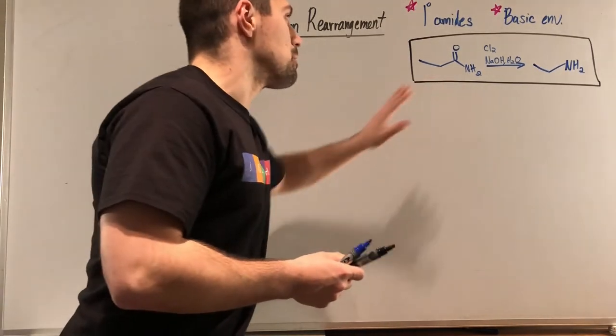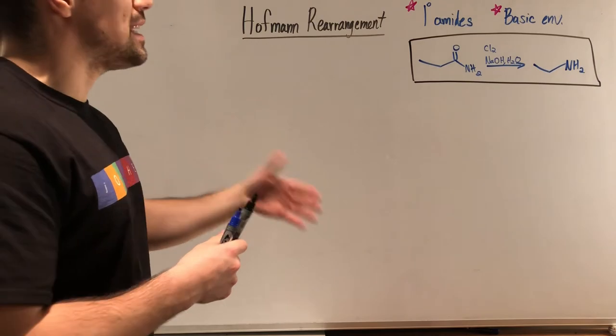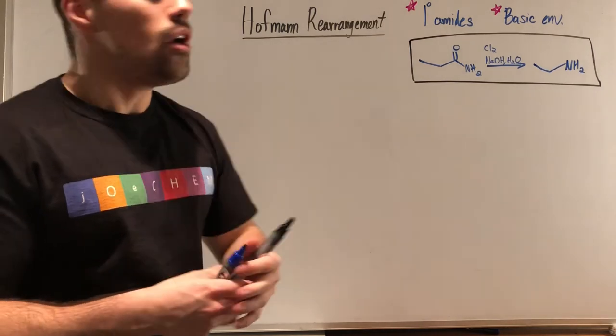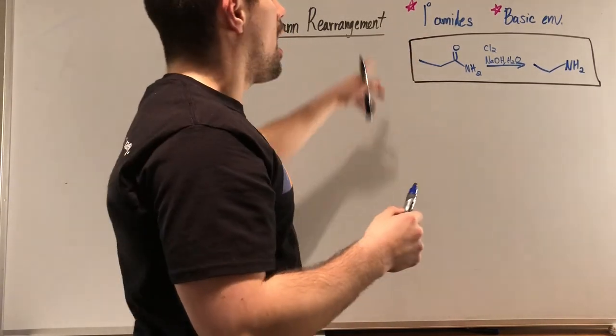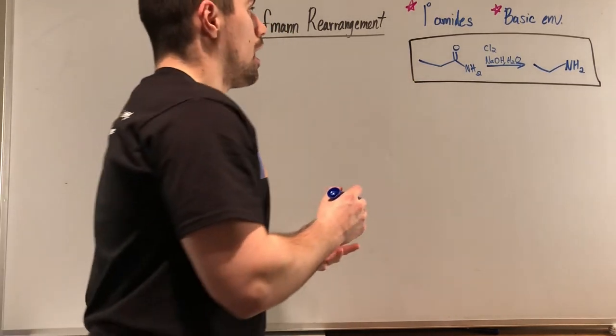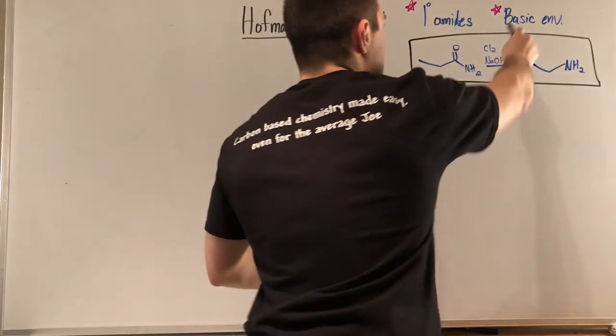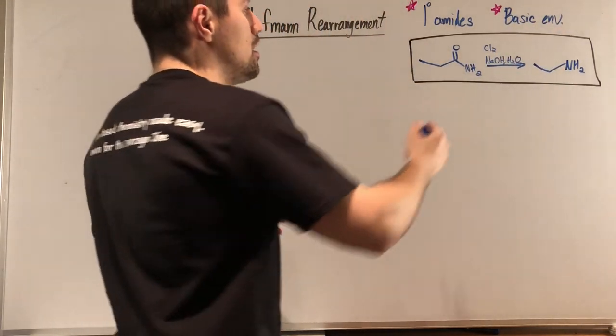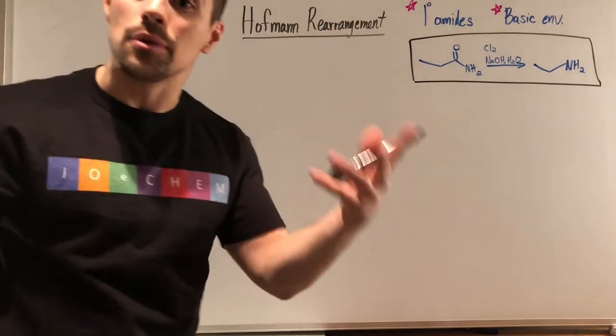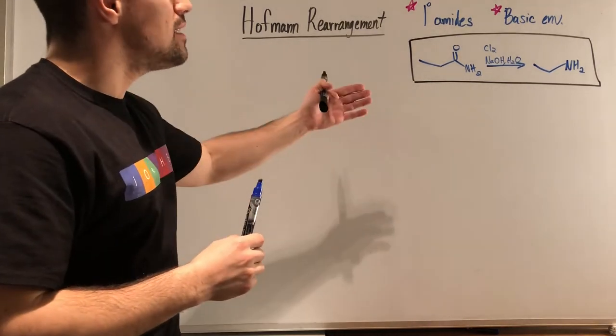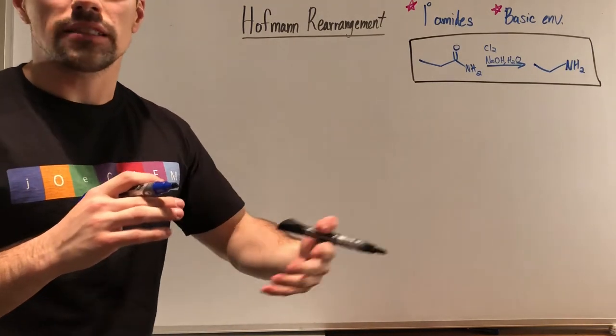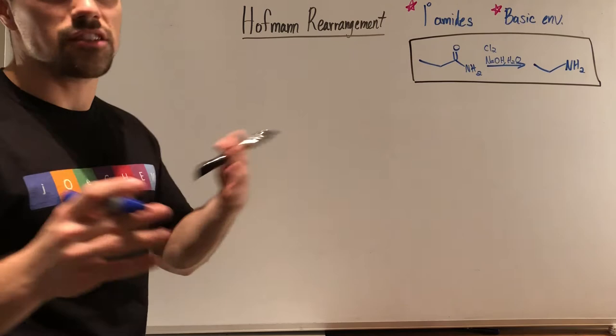So if you just take a quick look over here, in this reaction what we need is an amide, but it can't just be any amide, it has to be a primary amide, that's why there's a little pink star next to it. A primary amide, which by definition has to be terminal, has to be on the end of the structure, and also we need a basic environment. So the conditions we're dealing with here, we need a basic environment, that's why we see sodium hydroxide, and if we have hydroxide we're aqueous so there's water available to us, but we need some type of Br2, Cl2, some type of diatomic halogen.